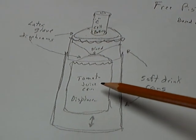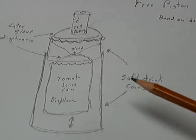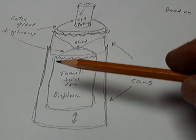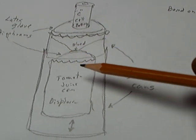It uses a tomato juice can and then a couple of soda cans, and then one is placed inside the other. And the latex glove, the white latex glove, is rubber banded around the cans.